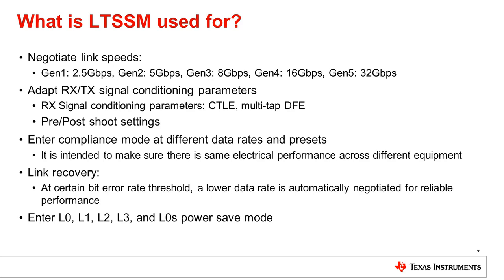Link recovery allows the link partners to recover from different interruptions in the data flow. These interruptions could be due to low bit error rate and diagnostic functions such as the loopback or a speed change. L0 is the normal operation or forwarding mode. In this mode, the retimer is purely an analog signal conditioning device and forwards data coming through with minimum delay. A retimer stays in this mode until instructed by LTSSM commands.